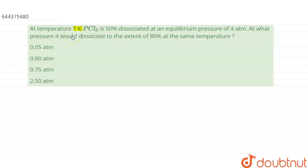Hello everyone. The question is: at temperature T Kelvin, PCl5 is 50 percent dissociated at an equilibrium pressure of 4 atm. At what pressure will it dissociate to 80 percent at the same temperature T Kelvin? We have been given four options, so let us first write the dissociation reaction for PCl5.